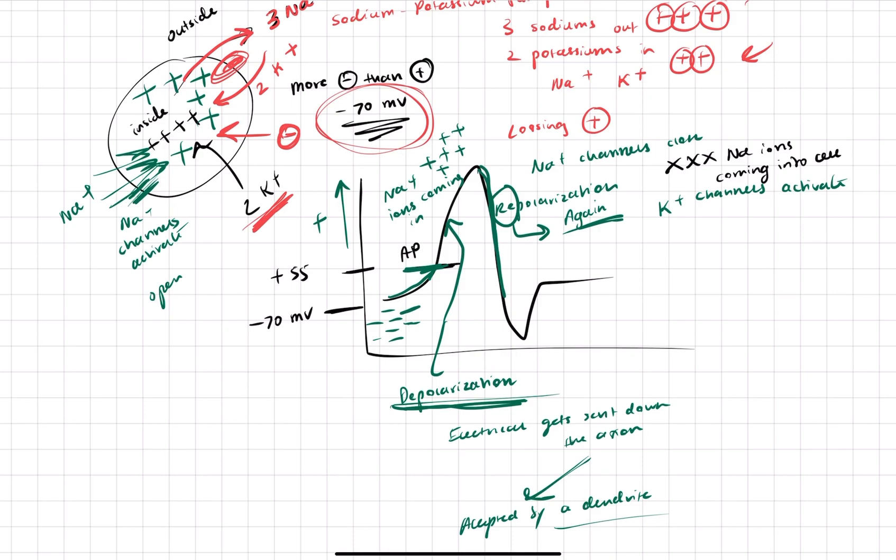And when the potassium channels activate, so let's kind of look at it here. So these sodium channels, which were open before, are going to close. Then, the potassium channels are going to open. And remember, the sodium-potassium pump is bringing potassium inside the cell. But now, the potassium channels are going to open. And all of this potassium is going to leave. So all of this potassium is going to leave.